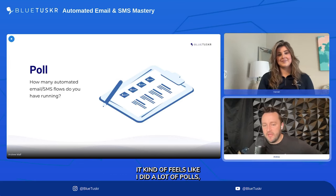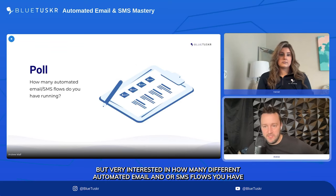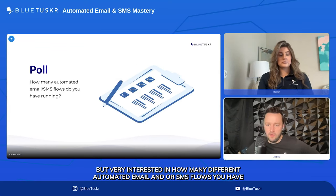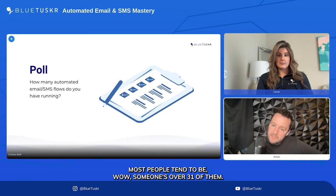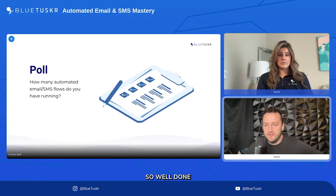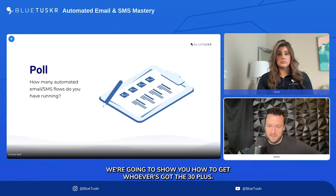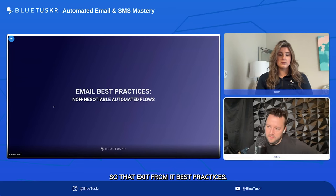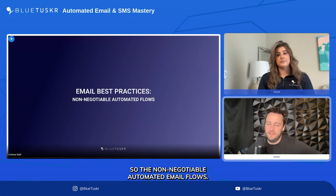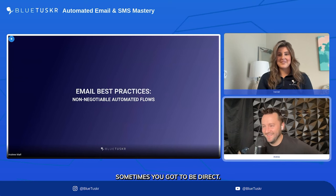We ran a second poll on how many automated email and/or SMS flows you currently have set up. We're seeing some people with over 31 flows — well done. A little under 10 tends to be more common. Best practices: the non-negotiable automated email flows. These are the ones you absolutely must have — not having this conversation is not an option.